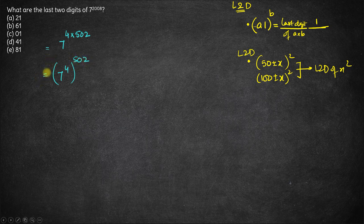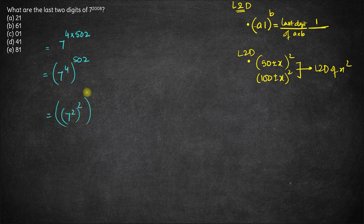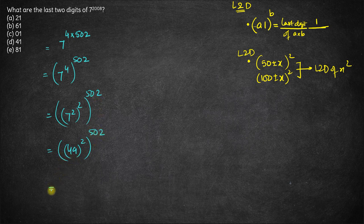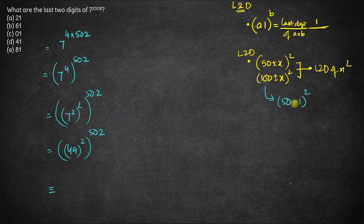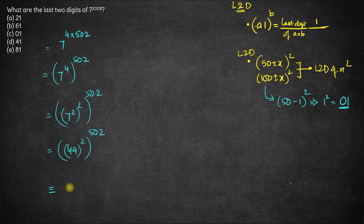Now, I'll be only considering the last two digits — I'm not bothered about the whole value, only the last two digits. So 7 to the power 4 can be written as 7 squared, squared, whole raised to the power 502. 7 squared is 49, so we have 49 squared, whole raised to the power 502. Now, the last two digits of 49 squared: 49 is 50 minus 1, so the last two digits of 49 squared will be equal to the last two digits of 1 squared, which is 1, or written as 01.